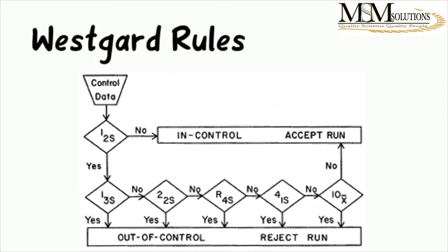If yes, it is outside — bigger than your 2 standard deviation — the second question you ask yourself is: is it also outside the 3S? So it's above both 2S and 3S. If yes, it has broken the 3S rule, meaning it is out of control, and you reject the run.